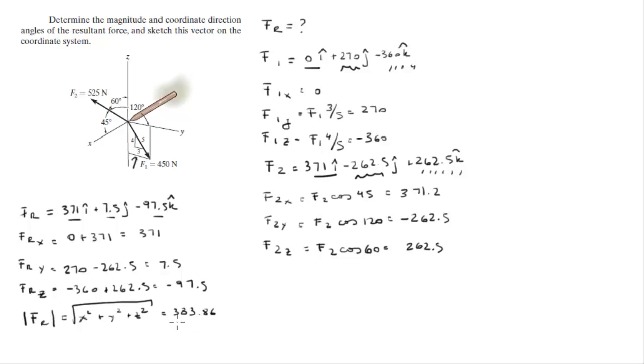Now with this value we can find the coordinate direction angles. To do that you got to do the cosine inverse of the x component over the magnitude, cosine inverse of the y component over the magnitude, and cosine inverse of the z component over the magnitude.